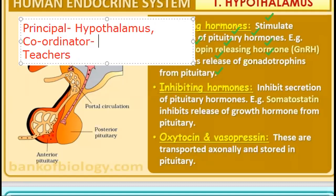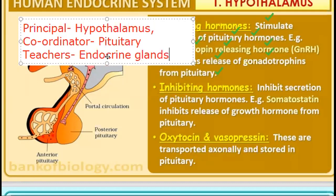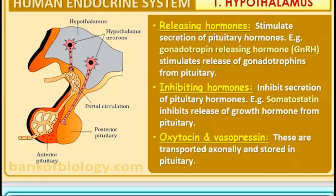When the hypothalamus releases a releasing hormone, it signals the pituitary to act, and the pituitary then signals the endocrine glands. You have to remember the definition of releasing hormones and inhibiting hormones with examples. Inhibiting hormones inhibit the secretion of the pituitary hormones. For example, somatostatin inhibits release of growth hormone from the pituitary.